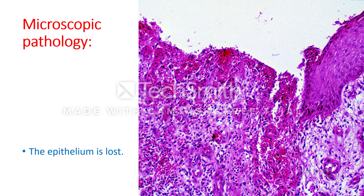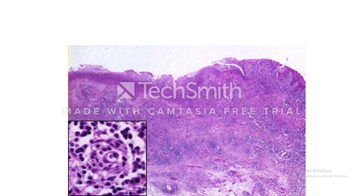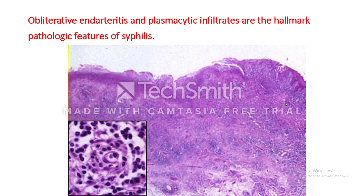Microscopically, the epithelium is lost and the base of the ulcer contains prominent blood vessels surrounded by numerous inflammatory cells, mainly plasma cells and lymphocytes. Obliterative endarteritis and the plasma cell infiltrate are the hallmark pathologic features of syphilis. The blood vessels show swollen endothelial cells with proliferation, and the vessel lumen may be completely obliterated — this is called obliterative endarteritis.